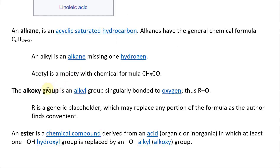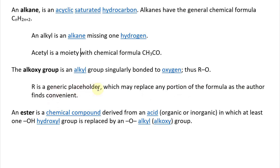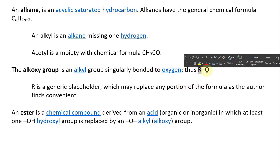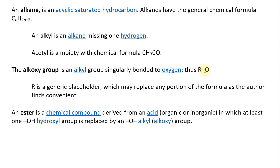An alkoxy group is an alkyl group that is singly bonded to oxygen, written as R-O, where R is a generic placeholder which may replace any portion of the formula as the author finds convenient. So basically it's connected to this -O, a single bond to oxygen.